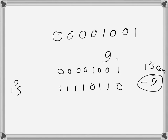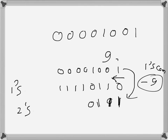For two's complement, we take the one's complement result and find its two's complement. Starting from the rightmost bit, we keep the first '1' unchanged and flip all remaining bits to the left. The result is 11110111, which is negative nine in two's complement representation.